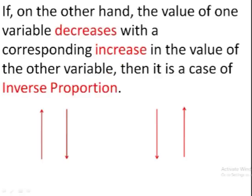On the other hand, if the value of one variable decreases when there is a corresponding increase in the value of the other one, or vice versa, it means they are going in opposite directions. So this is the case of an inverse proportion. Let's do some examples to understand what does it mean.